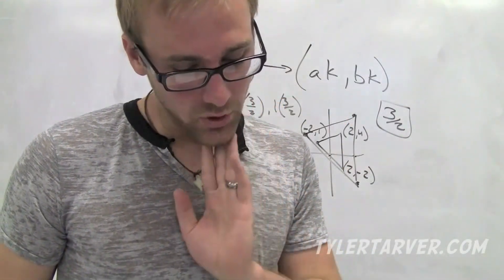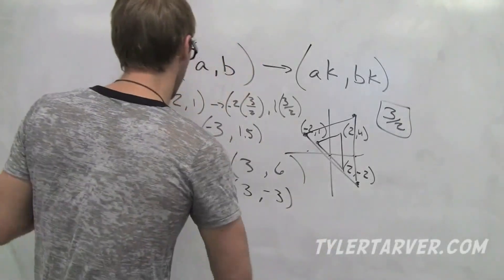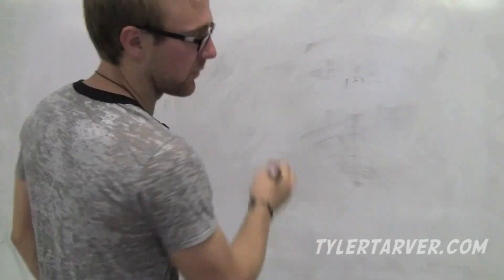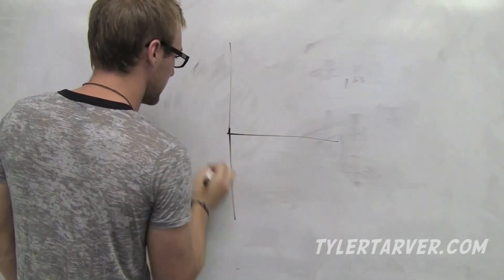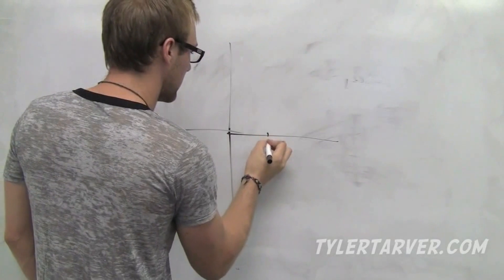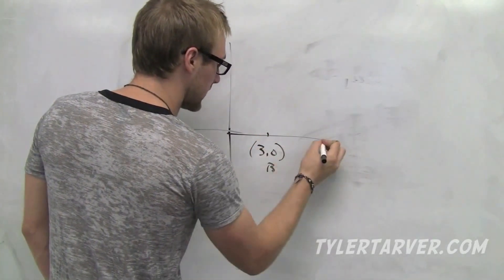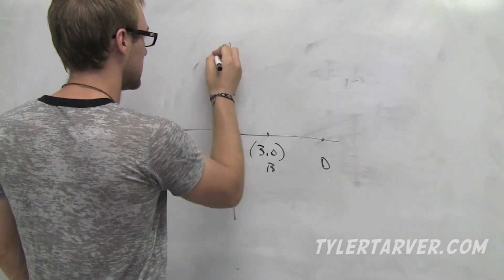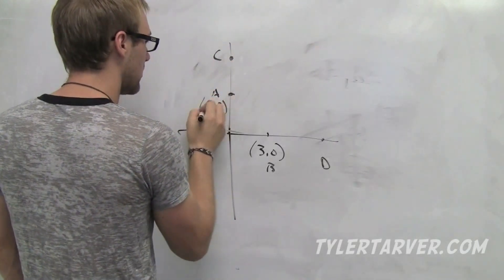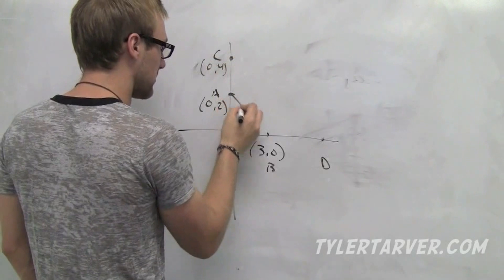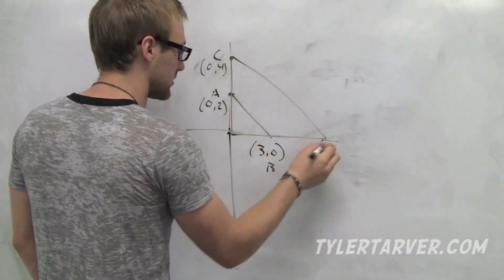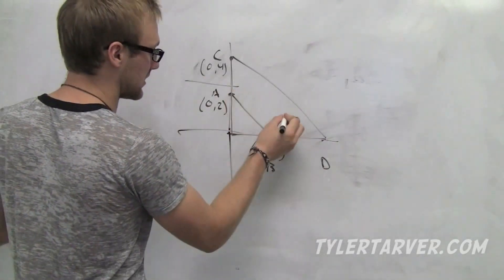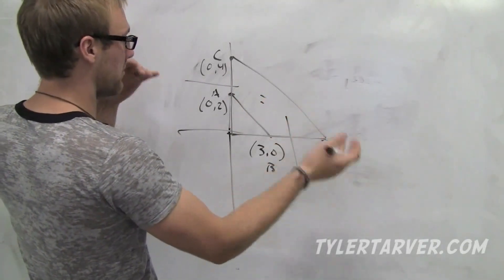Now let's work on finding coordinates of similar triangles. Say we've got a triangle with points: B at (3, 0), A at (0, 2), C at (0, 4), and D unknown. These are similar triangles and we need to find D. We set up a proportion — it's harder to mess up the proportion than to get it right. Four is how much C went up, two is for A, and we went over three for C, matching long lengths with long lengths and short with short.